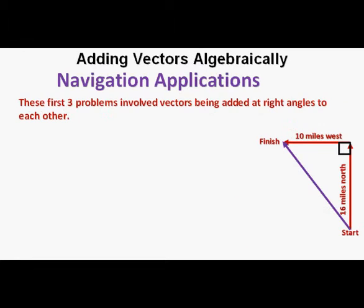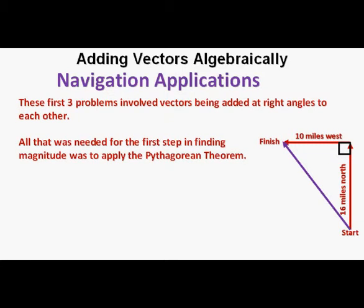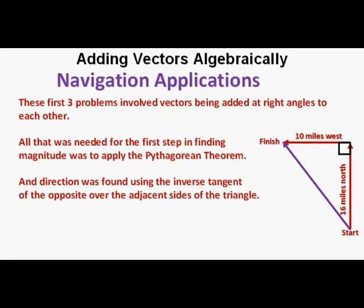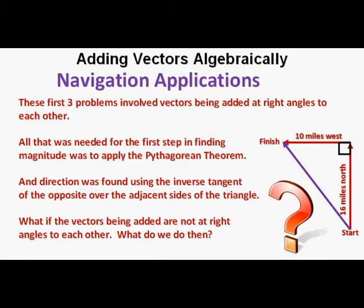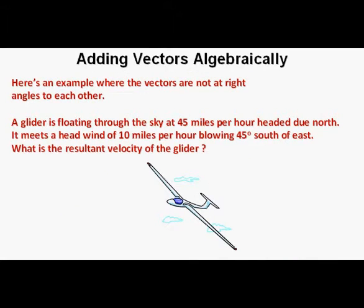In the first three problems, the component vectors were at right angles to each other. Consequently, the first step was to apply the Pythagorean theorem — the square root of quantity 16 squared plus 10 squared — and then find the direction using the inverse tangent of the opposite over adjacent sides. But what if the vectors being added are not at right angles to each other? The Pythagorean theorem will be insufficient. The last three problems will work out this situation where we do not have a right angle.